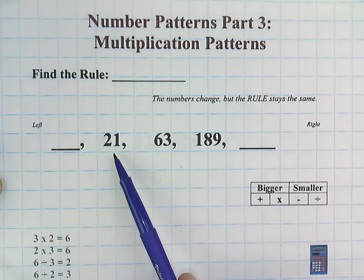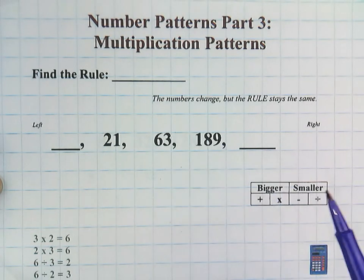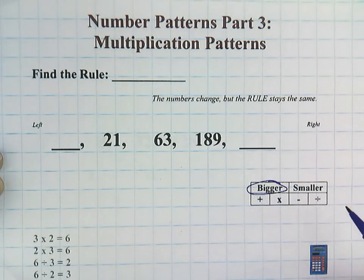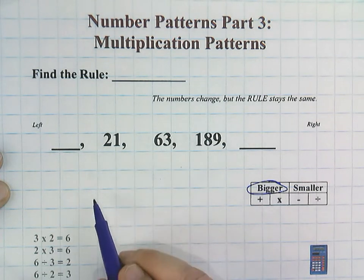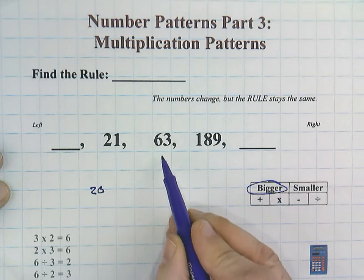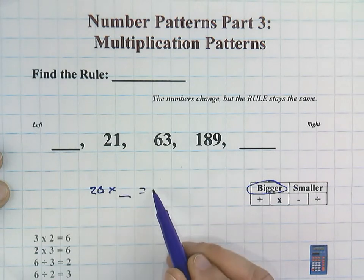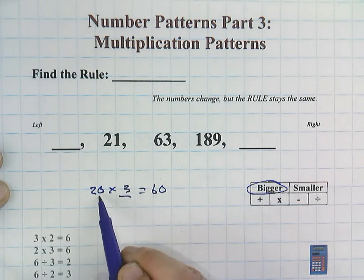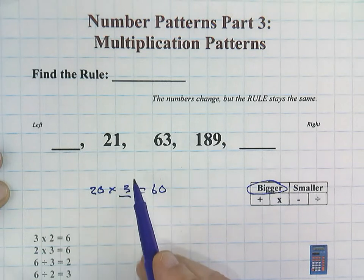Find the rule: 21, 63, 189. Numbers are definitely getting bigger. And I can just use estimating real quick. I could estimate that that's 20 times blank. And if I round that real quick mentally, I know that it's going to be 2 times 3, right? 20 times 3 would be 60. And that makes sense, the 1 times 3.